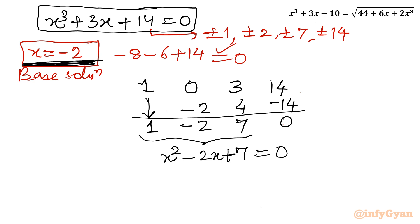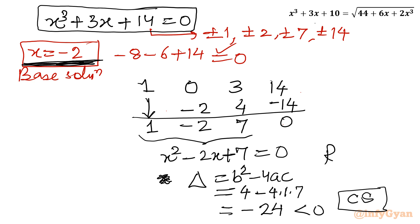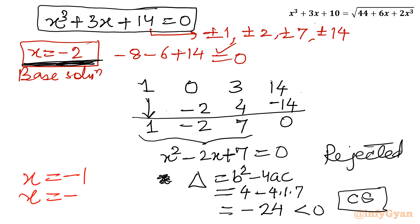Let's find out whether this quadratic has real solutions by computing the discriminant Δ = b² − 4ac = (−2)² − 4(1)(7) = 4 − 28 = −24, which is negative — so it gives complex solutions. We will reject this case. So far we have calculated two real values: x = −1 and x = −2.